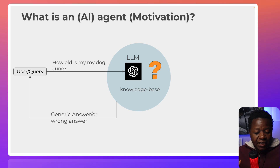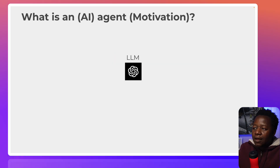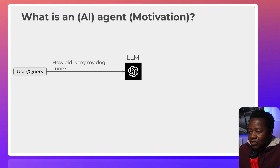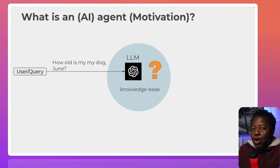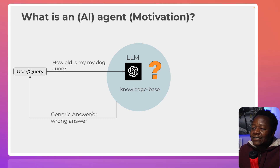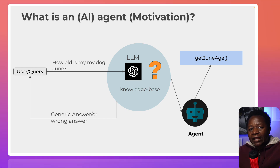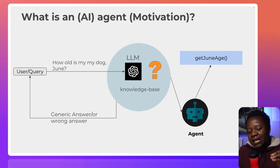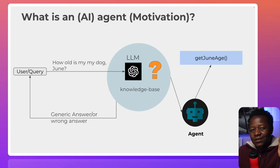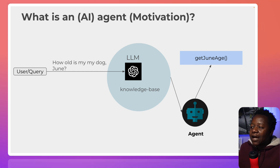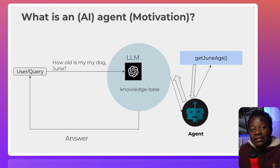It will hallucinate — give you a made-up answer, because that's what large language models tend to do. But how cool would it be if the same system could delegate this query to an agent when the model doesn't know the answer? The agent would be able to find that answer by calling certain tools. That's what an agent is — it aids the large language model and helps overcome its shortcomings, like hallucination.